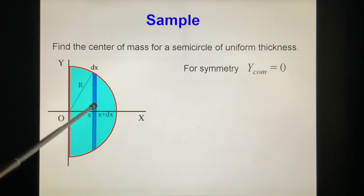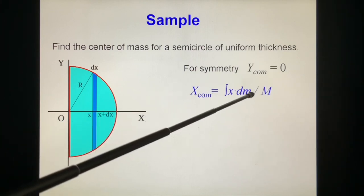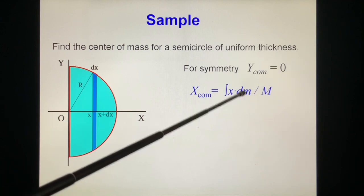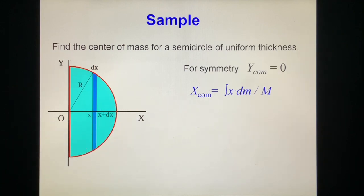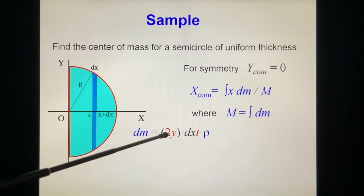In this one, what is the mass of this strip? It equals dx multiplied by 2y. This is the area, multiplied by thickness t and density rho, we get dm. Now X center of mass equals integral of x dm over M. This dm is the mass of this strip.